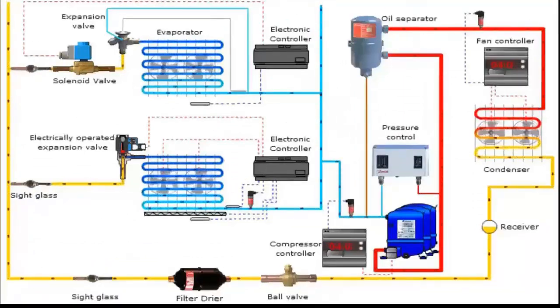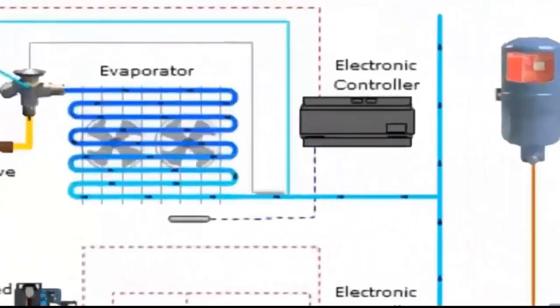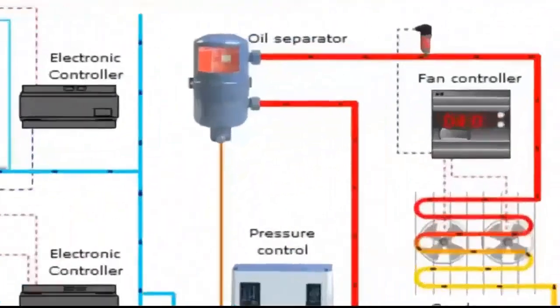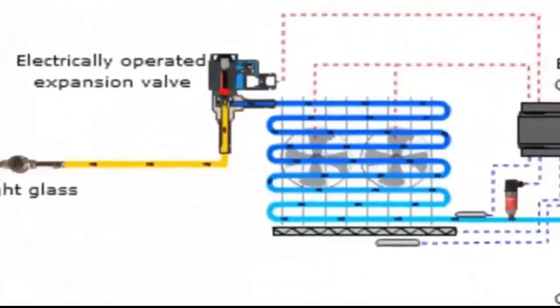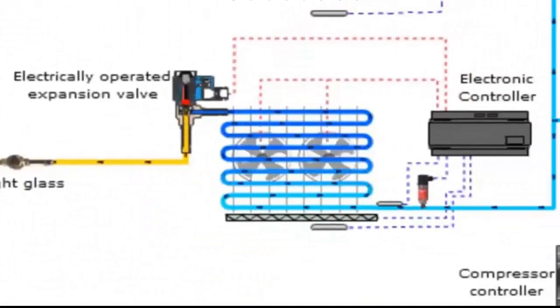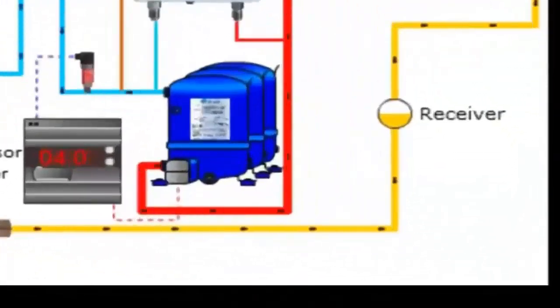1. Evaporator 1. 2. Solenoid valve. 3. Thermostatic valve. 4. Electronic controller 1. 5. Oil separator. 6. Condenser and condenser fan controller. 7. Evaporator 2. 8. Electronic expansion valve. 9. Electronic controller 2. 10. Decentral compressor controller. 11. Double pressure switch.